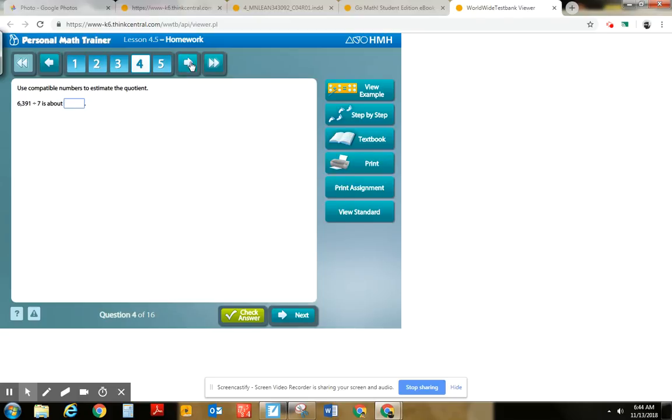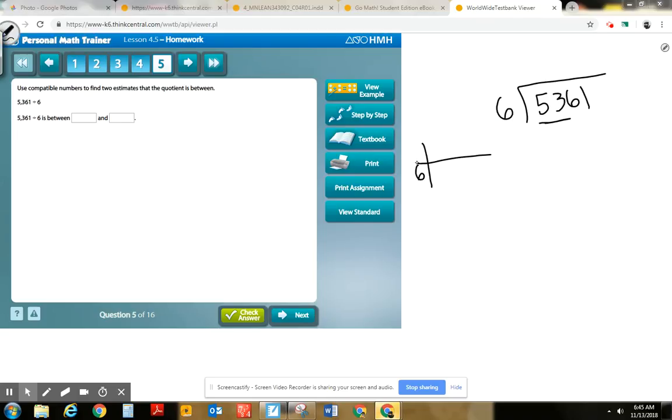Let's do problem five. So use compatible numbers to find two estimates that the quotient is in between. So we have to rewrite our problem: 5361 divided by 6. So really, I'm going to focus on the first two digits here. And the first step is to list out our multiples. So I always start with zero. It's that constant reminder that anything times zero is zero.